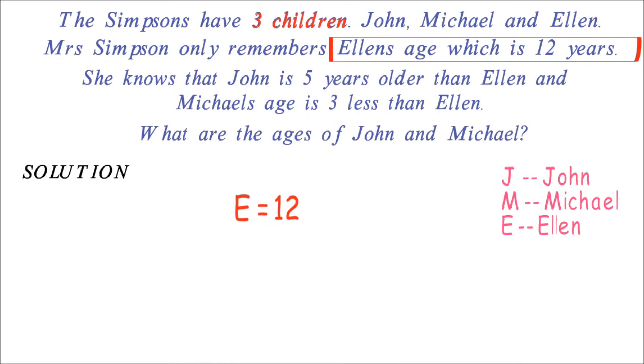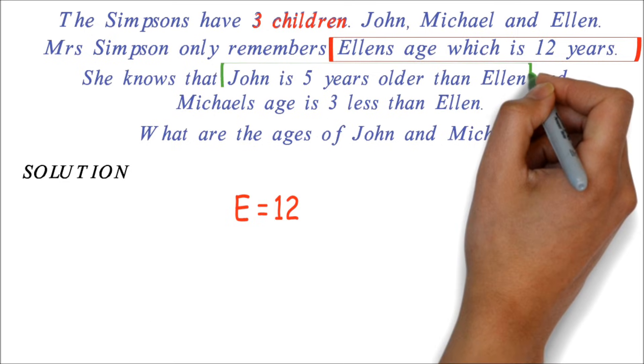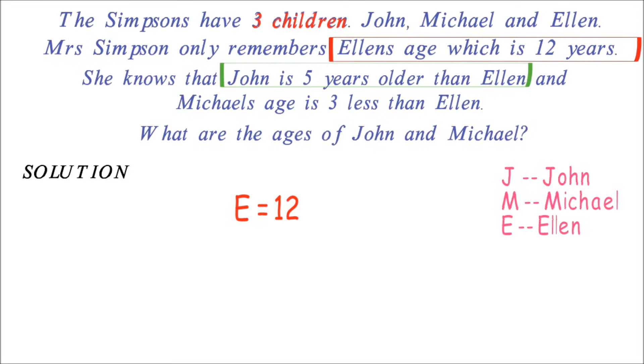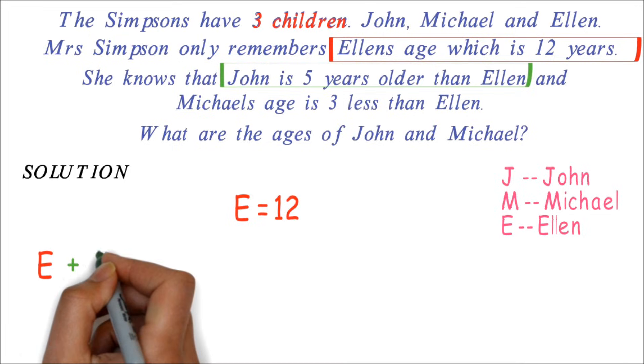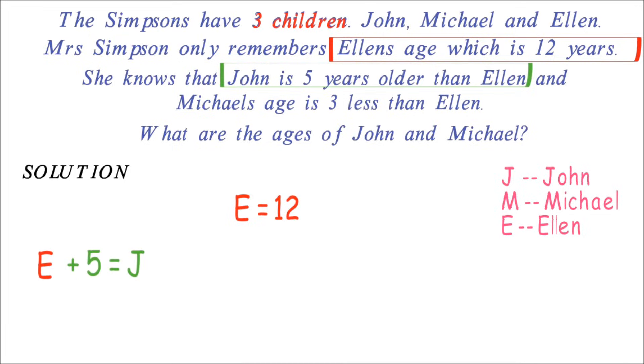The next information is John is 5 years older than Ellen. We know that older than represents addition. So we have E for Ellen's age plus 5 equals John's age. But we already know Ellen's age, so we can simply do 12 plus 5 to get 17.